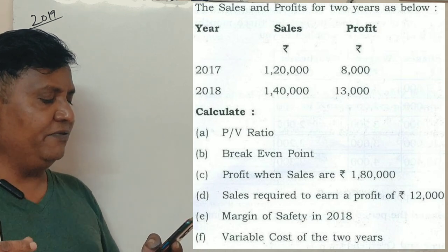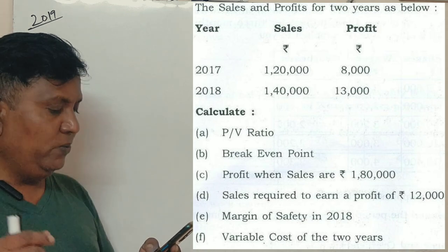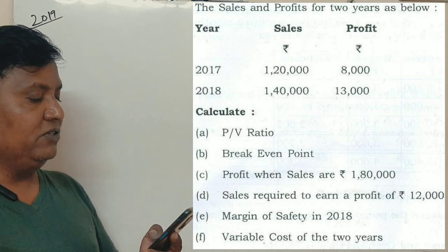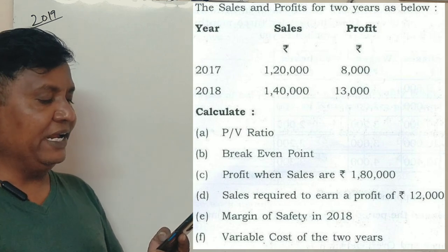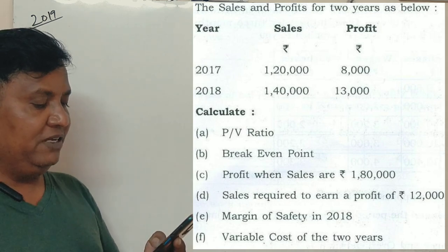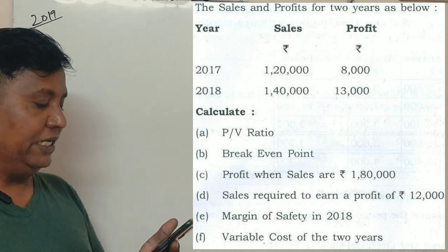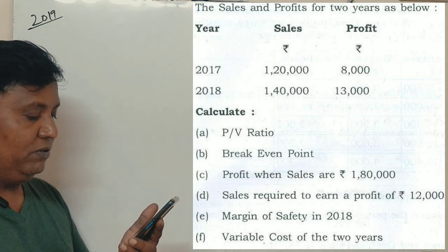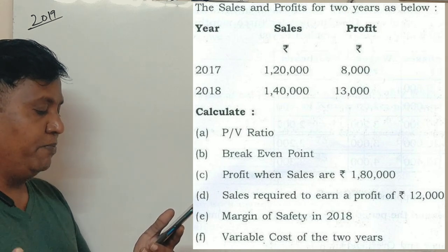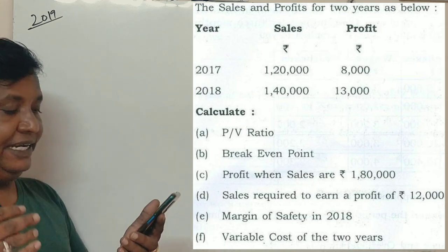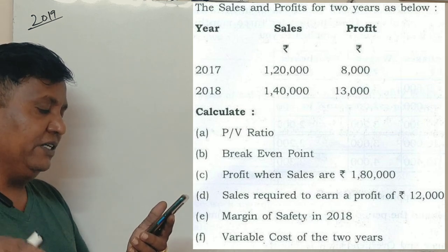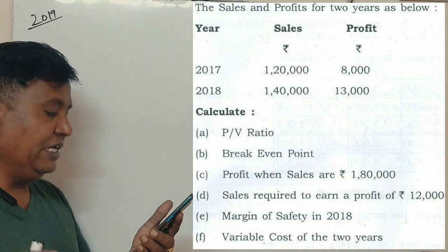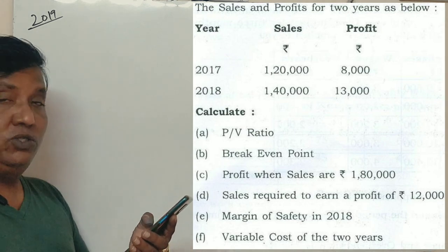The sales and profits for two years are shown. 2017-2018 sales and profits: 2017 sales is 1,20,000 and 2018 is 1,40,000. Profit is 8,000 and 13,000. What do we need to calculate? Calculate P/V ratio, break-even point, profit when sales are 1,80,000, sales required to earn a profit of 12,000, margin of safety in 2018, and variable cost of the two years.